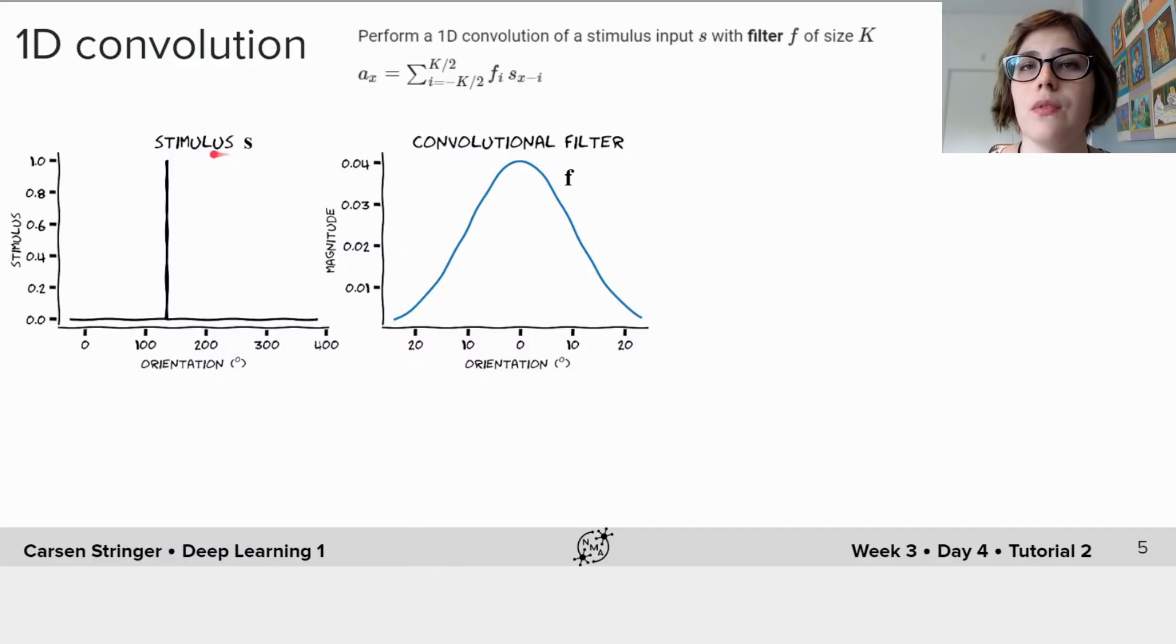In this case we've created our stimulus such that it's zero everywhere except for one in the stimulus bin where the stimulus is that orientation.